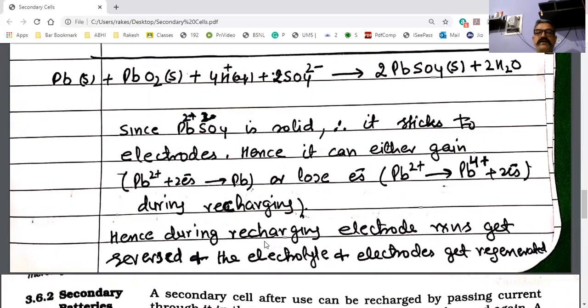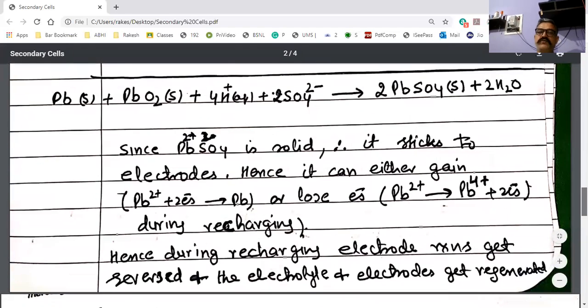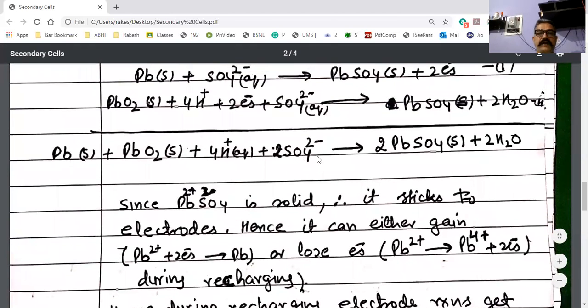Hence, during recharging, electrode reactions get reversed. When you have to recharge the cell, you will reverse the net reaction. What is the net reaction? If you have seen, our electrolyte concentration will be a little lower.